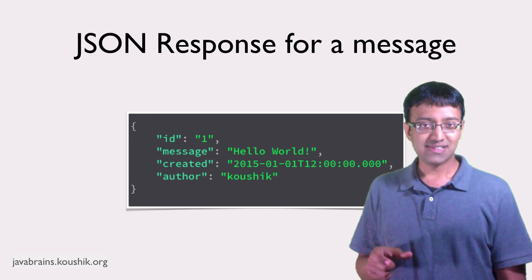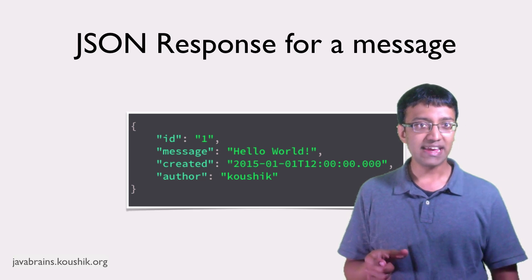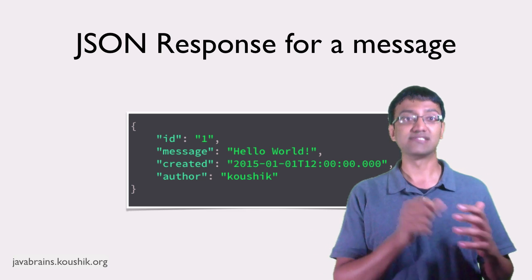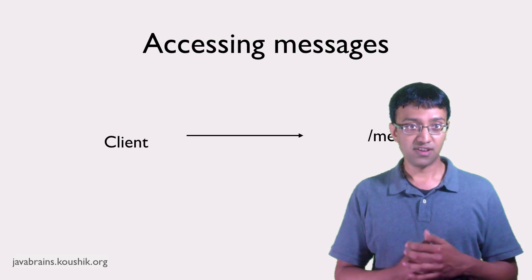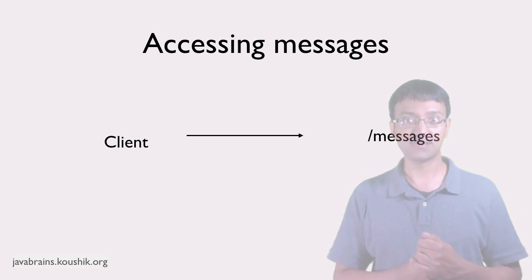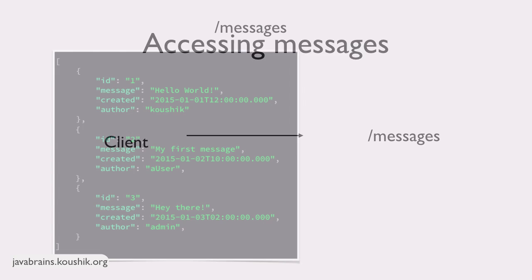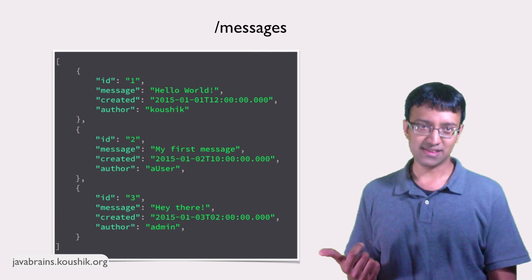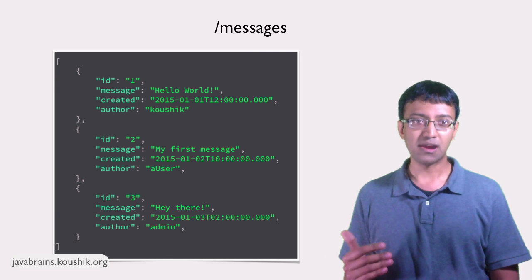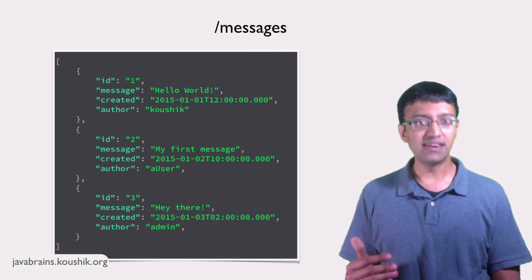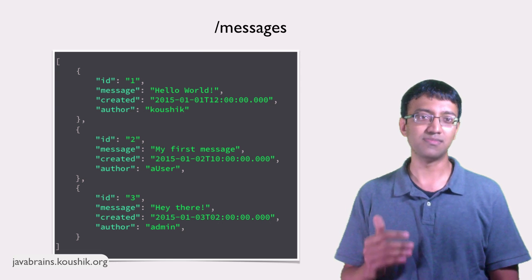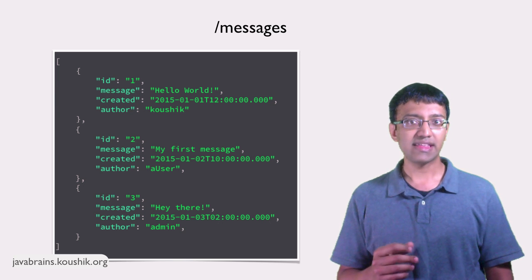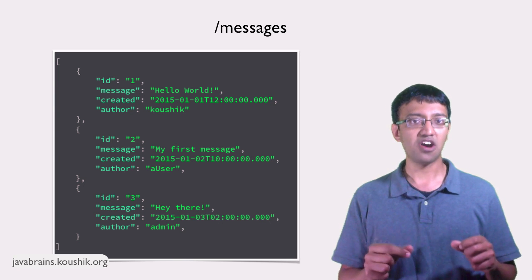Now when you access the slash messages collection URI, you basically get a collection of such message resources. So this is one message resource. So if you access slash messages, you get like a bunch of these message instances. To keep it simple, let's say there are just three messages in the system right now. Okay. Now if you access slash messages, you would get something like this, right? You have three message representations as a list, right? Because this is all there is in the system at this point.